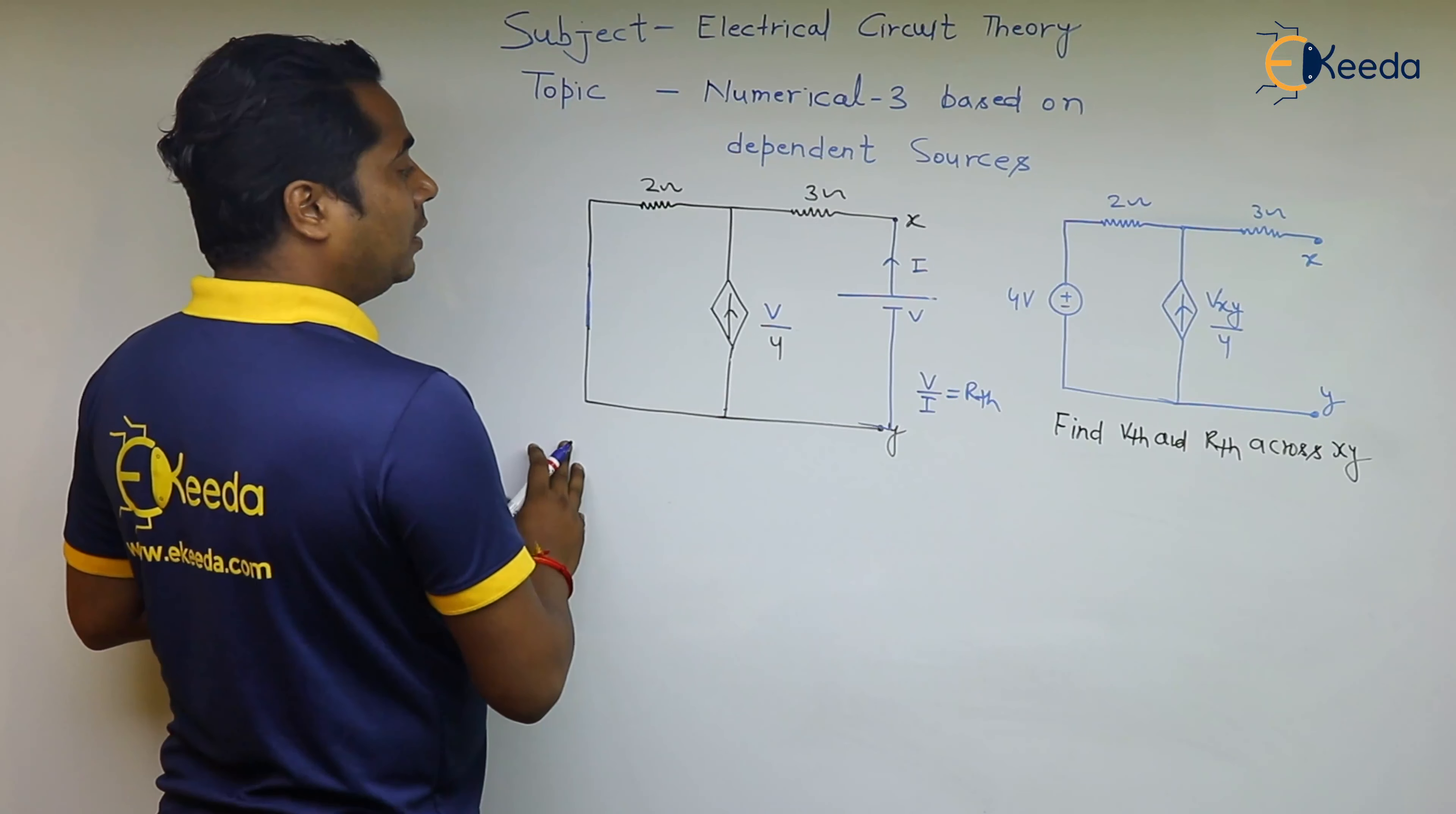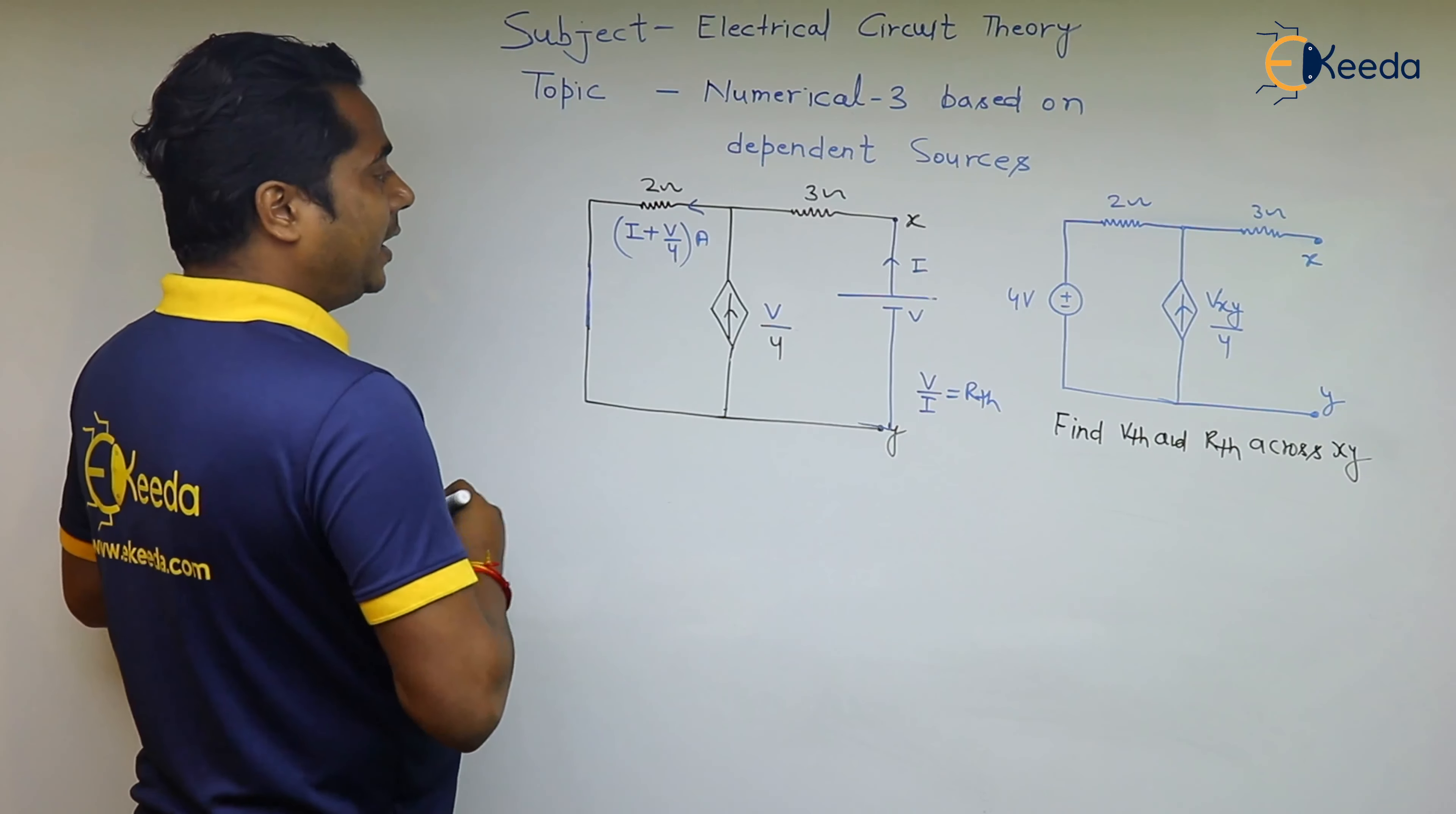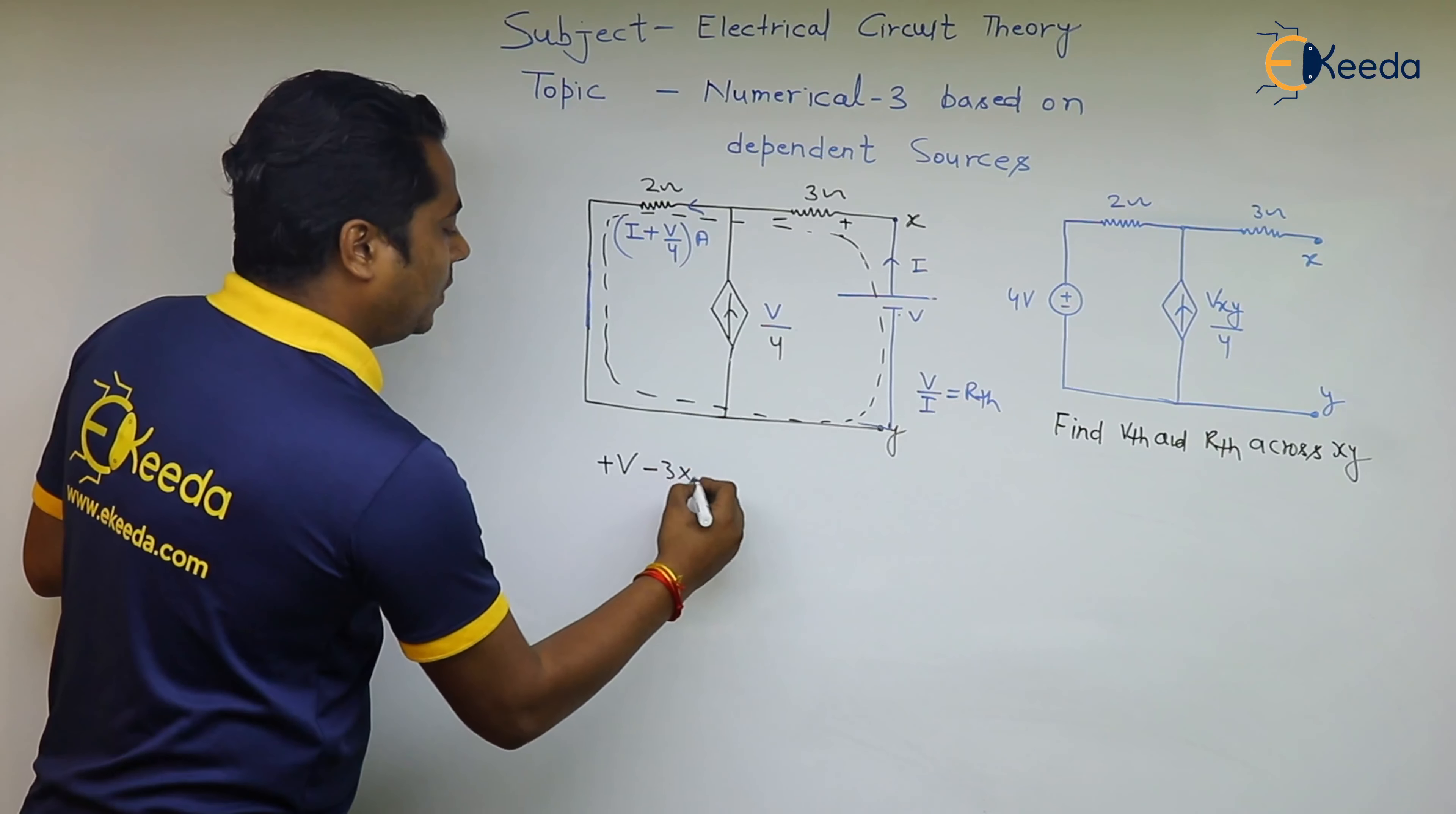Now here the current will be here I and here V by 4, so this will be I plus V by 4 ampere current flowing in 2 ohm resistor. Now applying the KVL in this bigger circuit: minus 2 plus V minus 3 into I plus V by 4.